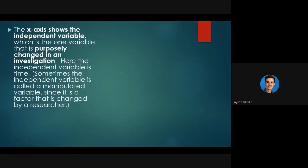The x-axis shows what we call the independent variable. The independent variable is the variable which is purposely changed in an investigation — we have control over it. For example, say I was doing a lab timing how long it took for all of you to run 20 meters — a little sprint.